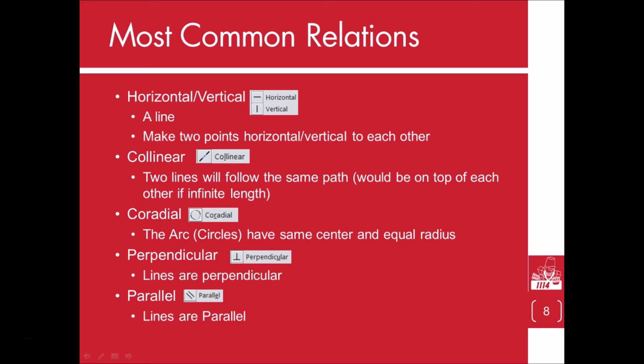Horizontal or vertical is used to make lines or two points horizontal or vertical to each other. These are shown as two different relations. Colinear is used to make two different lines follow the same path as one another.